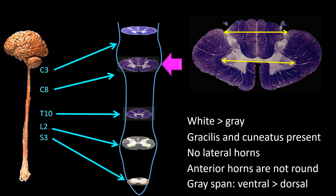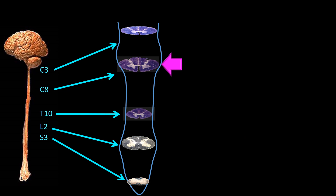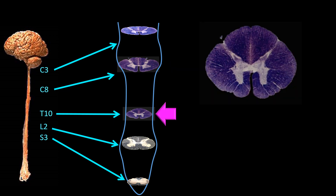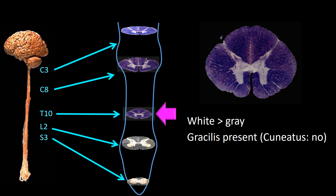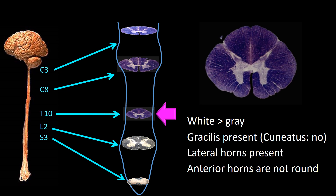Going from C3 to C8, there are few differences: still more white matter than gray, gracilis and cuneatus tracks are present, lateral horns are not present (though traces can sometimes be seen), anterior horns are not round, and ventral span is wider than dorsal span. This expansion of the ventral horns is the major distinction between the upper and lower cervical spinal cords. From C8 to T10, changes are more noticeable: white matter remains more abundant, gracilis is present but cuneatus is absent, lateral horns are present, and dorsal gray span is longer than ventral gray span.